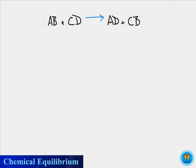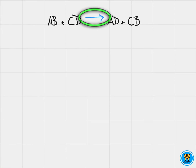Up until this point, we've only seen chemical reactions that occur in one direction as indicated by this reaction arrow.